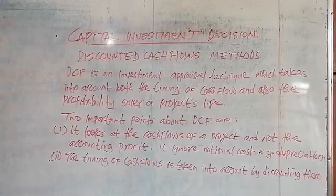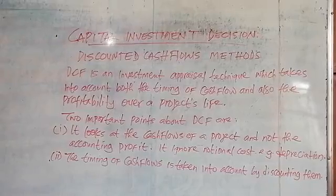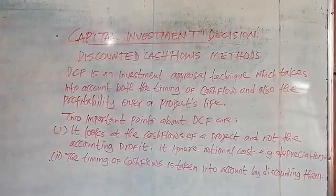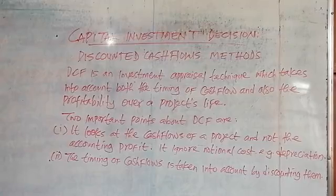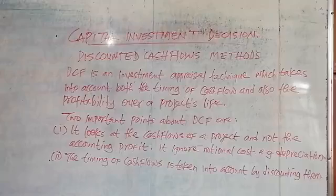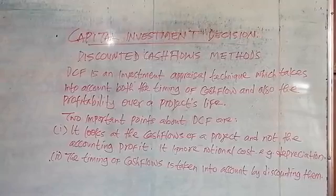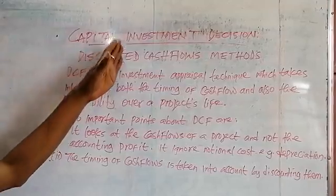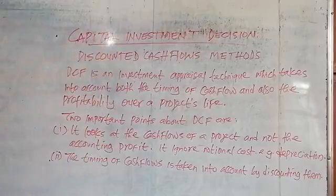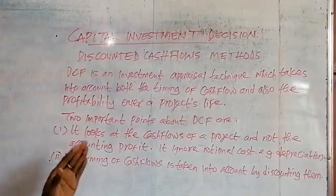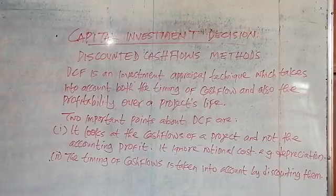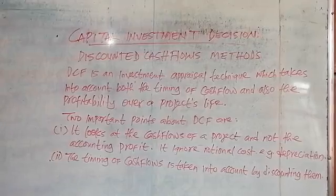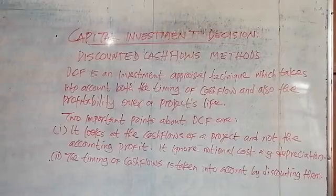In making decisions under Capital Investment, there is a need for the company to appraise the project in which they want to invest the company's resources, in order to determine whether the project is worthwhile or not. As we know, this investment involves a large capital outlay. We need to appraise the investment to know whether it is worthwhile. We have basically two methods for appraising projects: the traditional method and the discounted cash flow method.